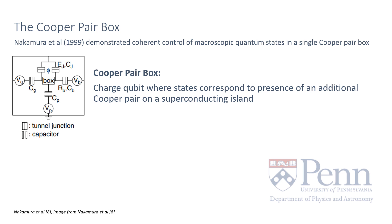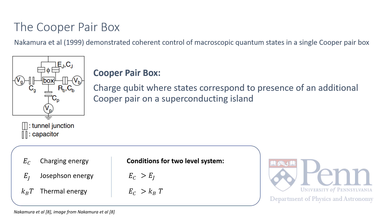Nakamura and team in 1999 demonstrated that the Cooper pair box state evolution could be controlled in a coherent manner. There are a large number of electrons in the metal box electrode which form Cooper pairs under superconductivity, representing a single ground state of n Cooper pairs. The low energy excitations all arise due to Cooper pair tunneling through the Josephson junction. If our charging energy EC is greater than the Josephson energy and thermal energy, we create an effective two-level system by taking the lowest two energy states, typically only separated by a single Cooper pair. As the energy gap of these two lowest energy states can be controlled by the voltage across the Josephson junction, we have a two-level system with coherent control.